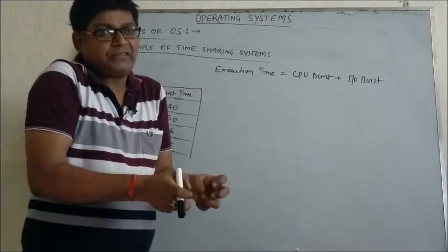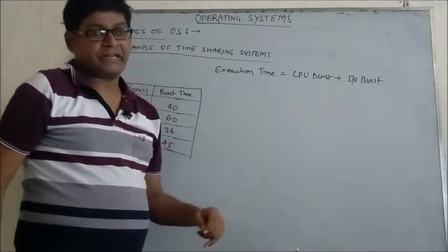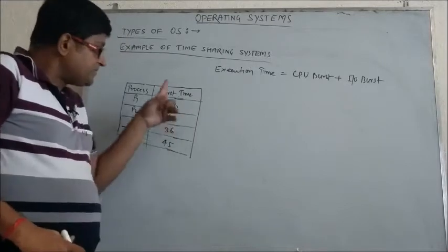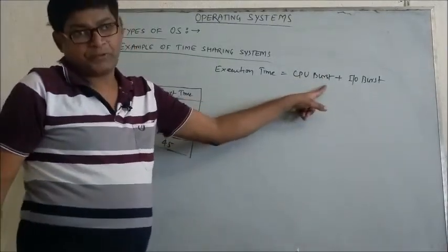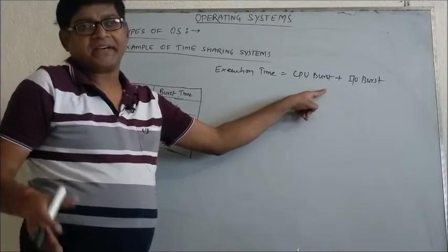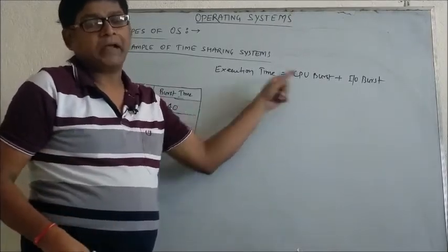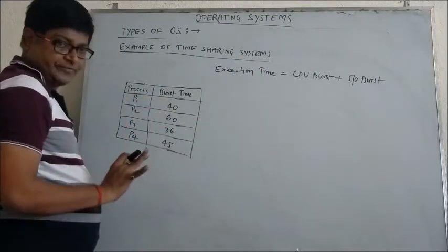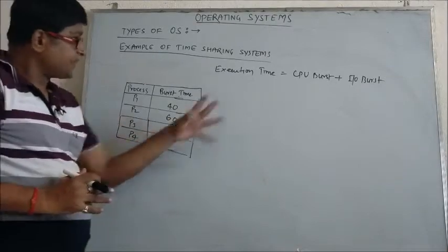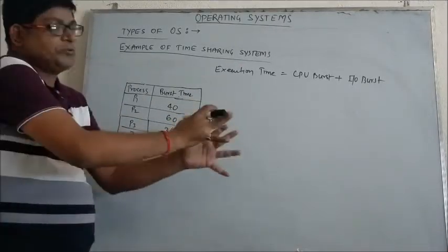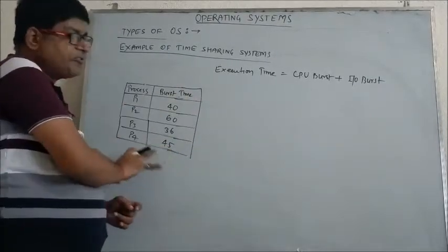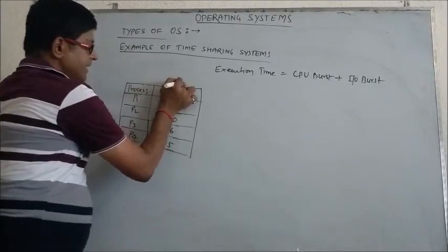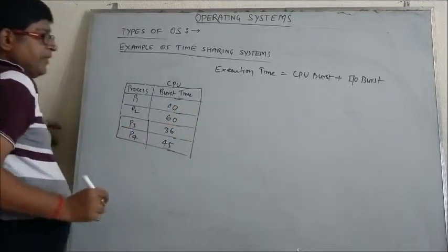The combination of CPU burst and IO burst is known as total execution time. But in numericals, when I teach about process management, I will take burst time to mean simply CPU burst time — that is, how much time the CPU has taken to execute a process completely. I am not taking the IO burst time into account. So burst time here is your CPU burst time.